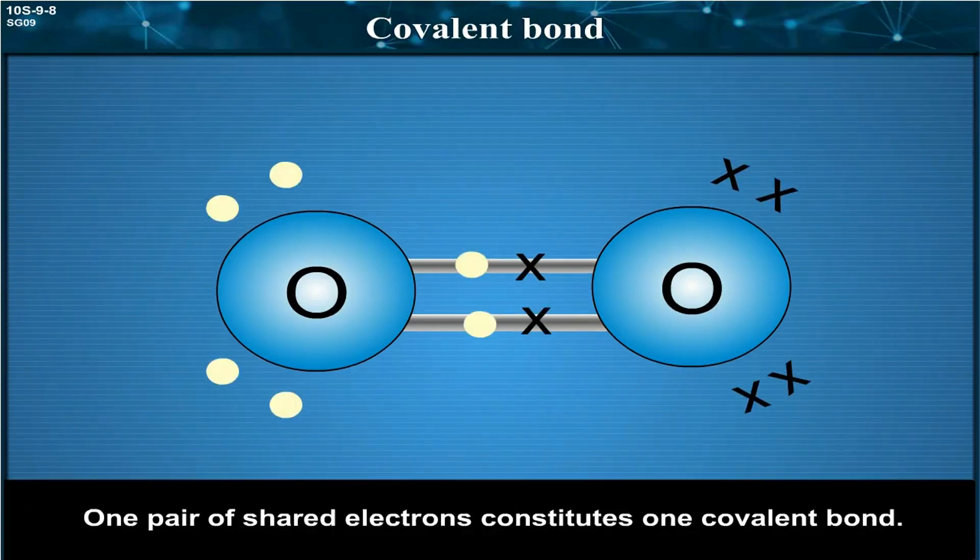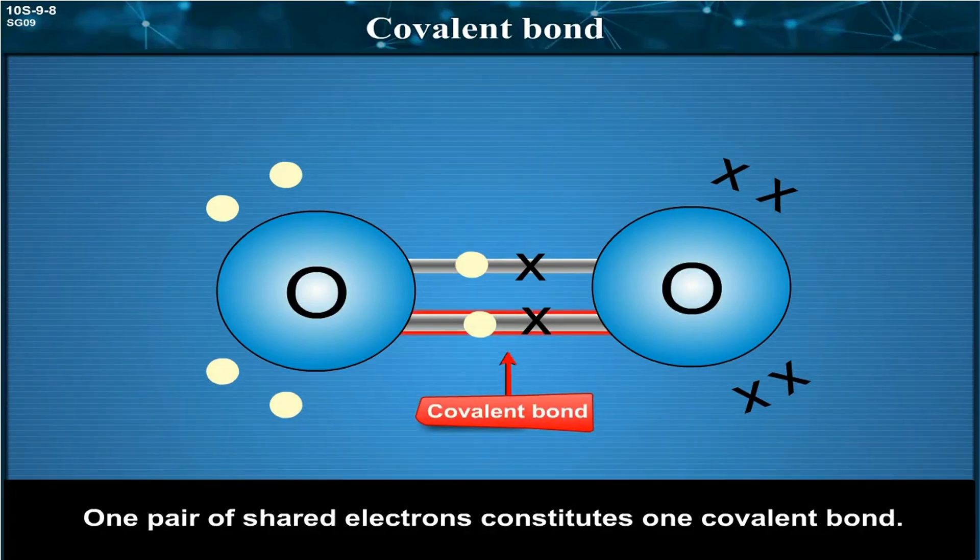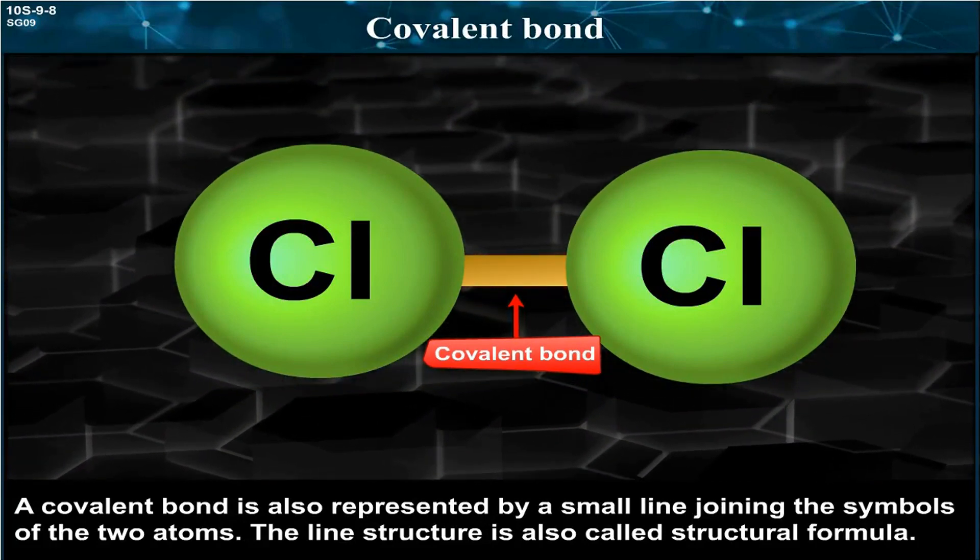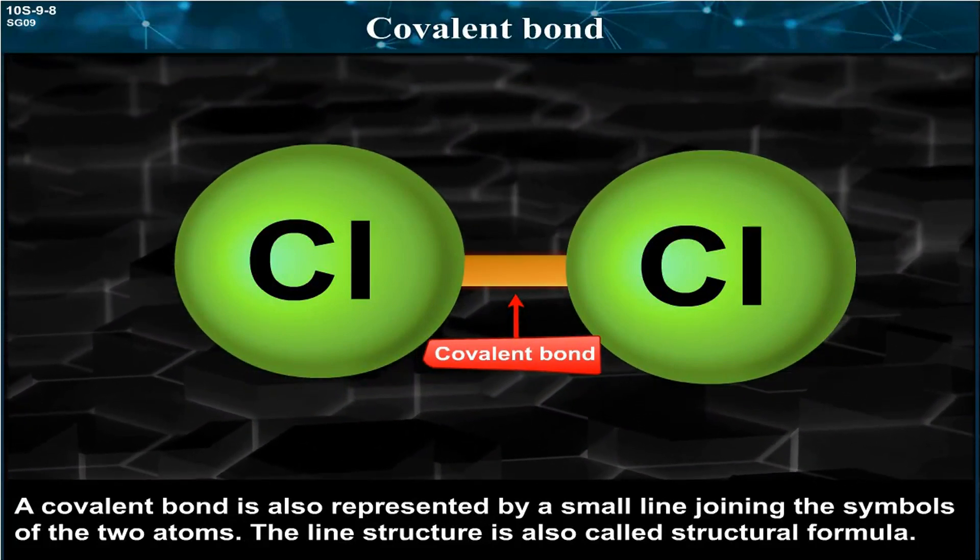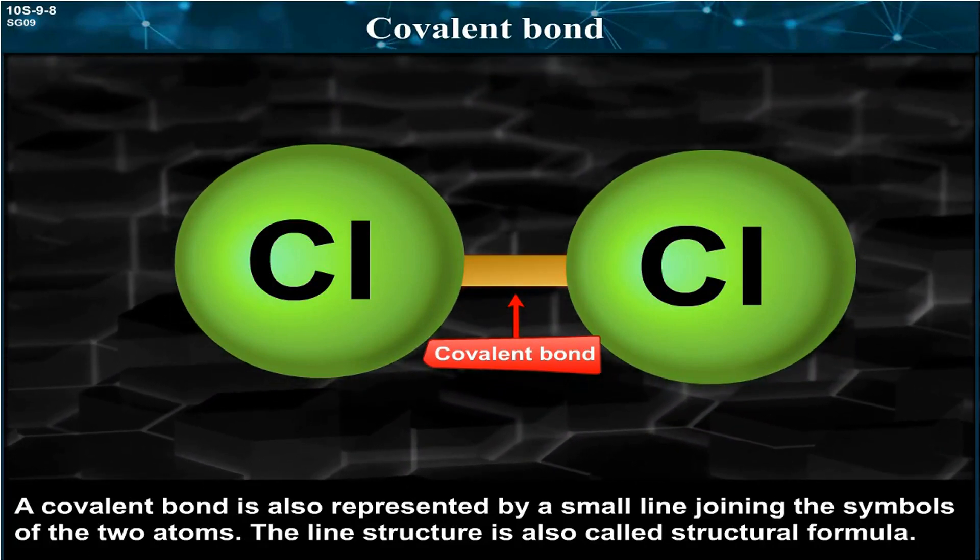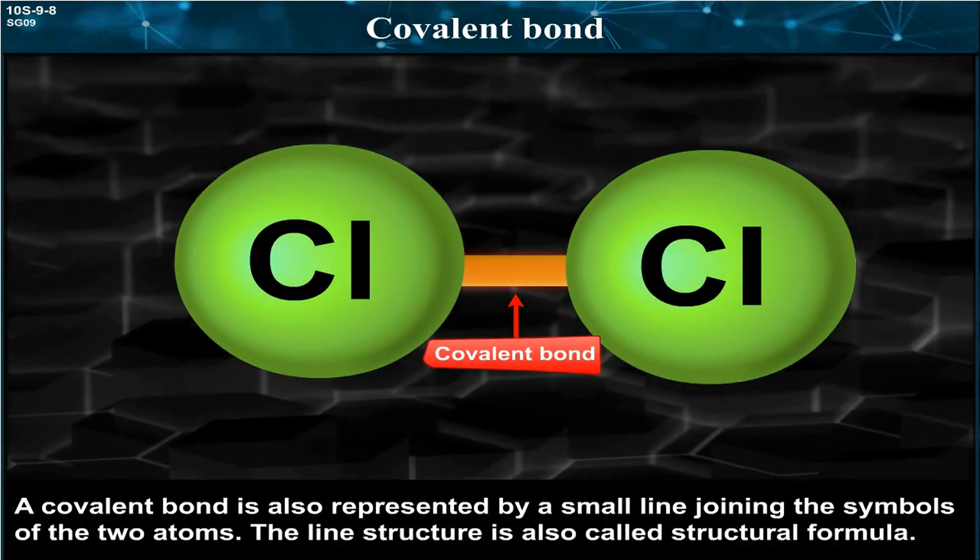One pair of shared electrons constitutes one covalent bond. A covalent bond is also represented by a small line joining the symbols of the two atoms. The line structure is also called structural formula.